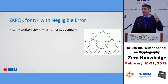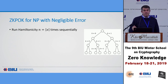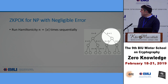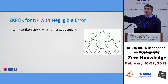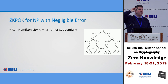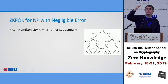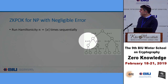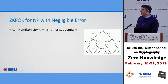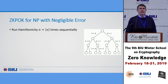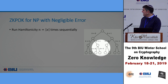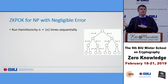This binary tree traces all possible verifier queries across n sequential executions. Each path from root to leaf corresponds to a specific sequence of verifier bits. The extractor strategy: at each node (each execution), it tries to extract by sending both query zero and query one. If the prover answers both queries, we got a Hamiltonian cycle and we're done. If it answers neither, the verifier rejects on that path. If it answers exactly one, the extractor traverses that edge — going left or right — and continues to the next execution.